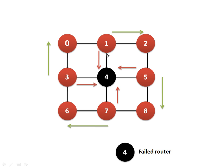Similarly, if node 5 wants to send a packet to node 0, according to XY routing it has to be sent to node 4, but since node 4 has failed, node 5 will send it south. The green directions are actually showing: if a node wants to send a packet and the next node is a failed router, instead of following XY routing, they will reroute. This node will send up, this node will send right, this node will send south, and this node will send left.